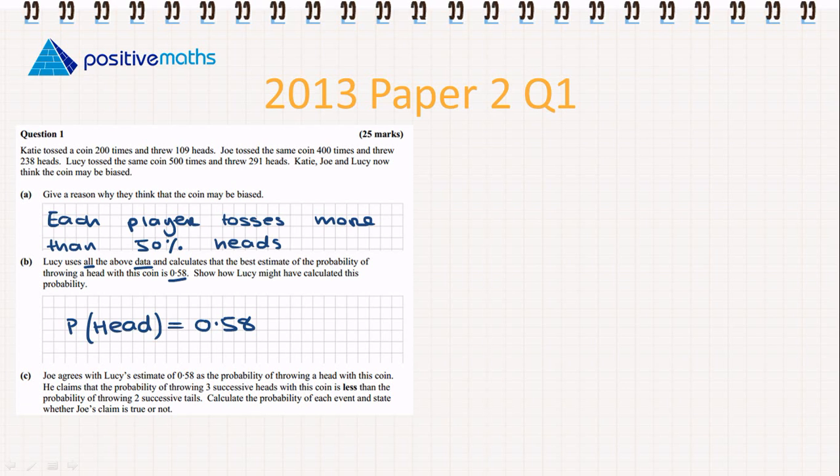The last part, C. Joe agrees with Lucy's estimate of 0.58 as the probability of throwing a head with this coin. He claims that the probability of throwing three successive heads is less than the probability of throwing two successive tails. Calculate the probability of each event and state whether Joe's claim is true or not. We have the probability for tossing heads as 0.58. Therefore, the probability of tossing tails is 0.42.